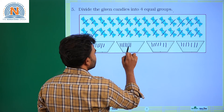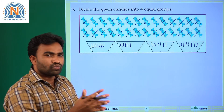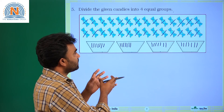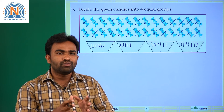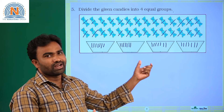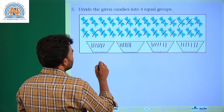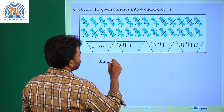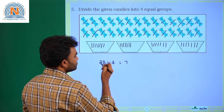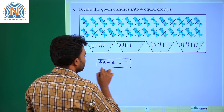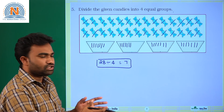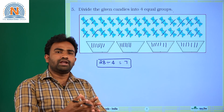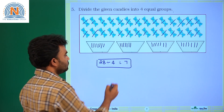In the second group: one, two, three, four, five, six, seven. So each group will have only seven. As we have shared or divided all the candies equally into the groups, all the groups will have seven. That means 28 divided by 4 is equal to 7. When we share or divide 28 candies among four groups, each group will have seven candies. So the answer is seven.